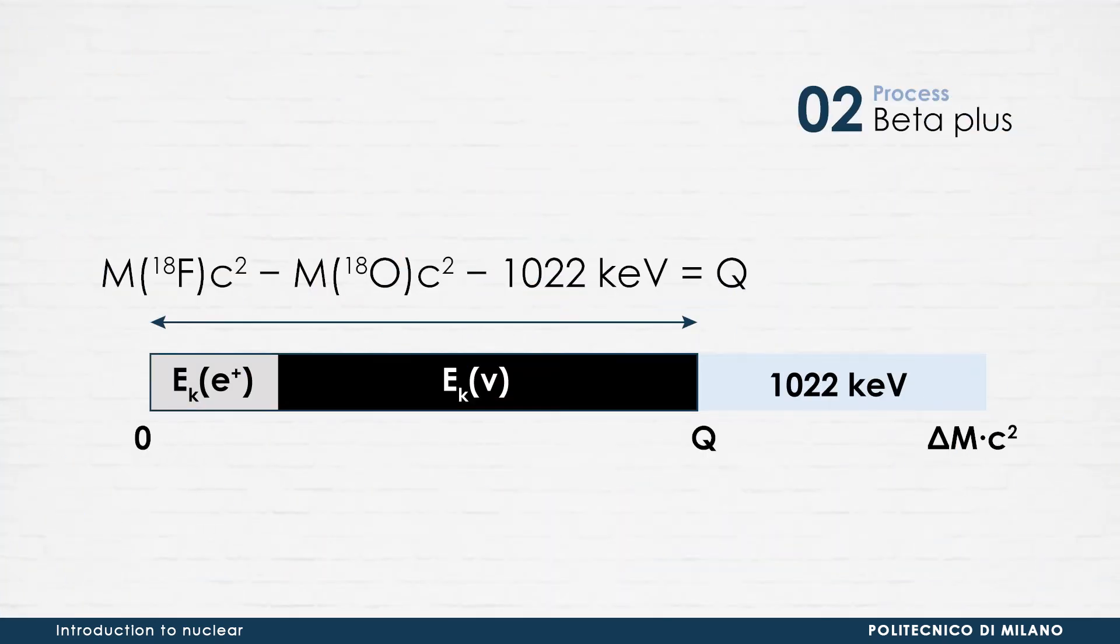By looking at the Q-value calculation for beta plus decay, we can observe its energy constraint. 1022 keV of the energy gained from the change in the atomic mass are lost in triggering the process.